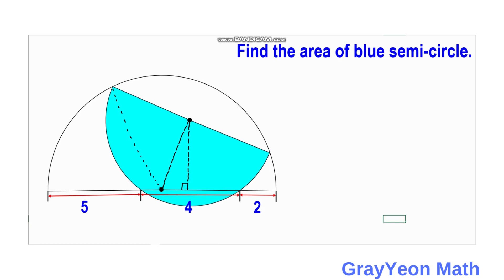Next, we draw another radius from the center of the blue semicircle to this point — this is also a radius. So next, we compute the radius of this larger semicircle, and that would be equal to r. Let's call this r_L.